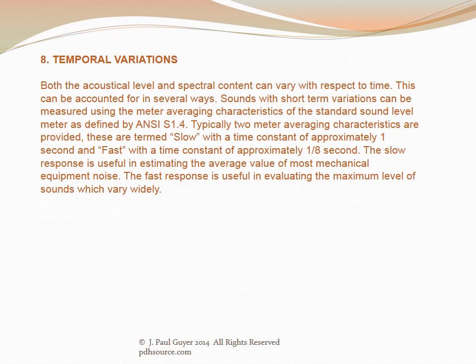Both the acoustical level and spectral content can vary with respect to time, which can be accounted for using the meter averaging characteristics of the standard sound level meter as defined by ANSI S1.4. Two averaging characteristics are provided: slow, with a time constant of approximately one second, useful for estimating the average value of most mechanical equipment noise; and fast, with a time constant of approximately one-eighth second, useful for evaluating the maximum level of sounds that vary widely.